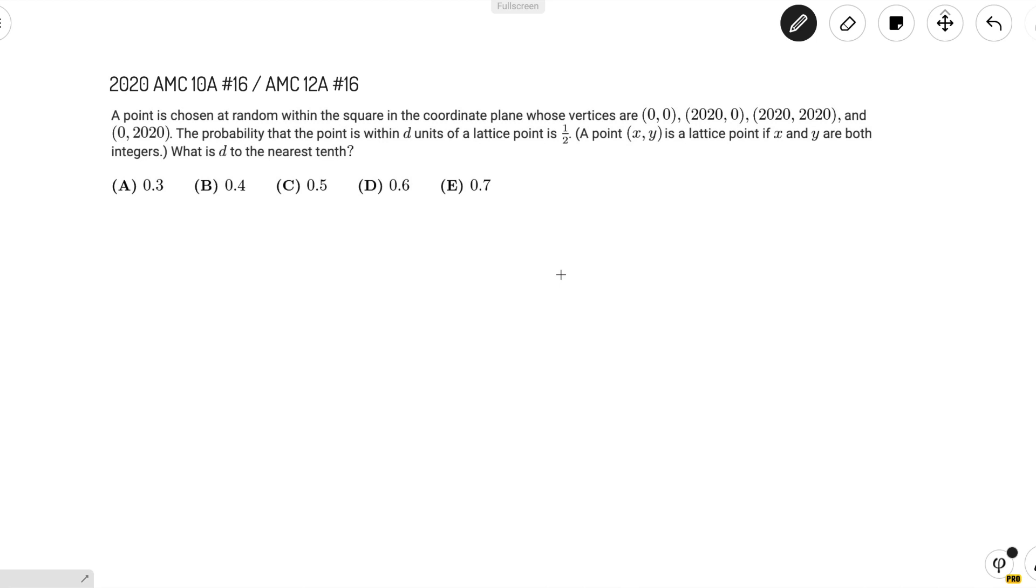The first key thing to note in this problem is that it's the same thing as looking at one unit square with the four corners as the lattice points and seeing the probability that it's within d units of a corner.